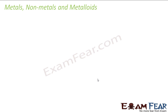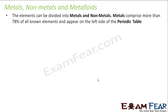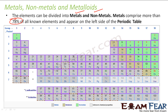Now let's see how we can classify the metals, nonmetals and metalloids in a periodic table. The elements can be divided into metals, nonmetals and metalloids. Metals are 78 percent — the majority — and they appear on the left hand side. All the blue ones are the metals, the grey colour is the metalloids, and the green ones are the nonmetals.